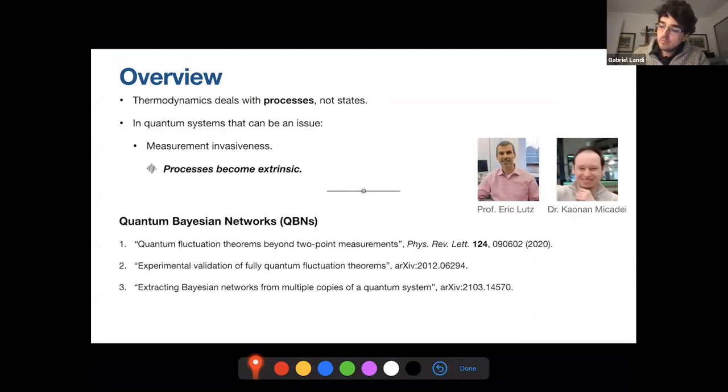The take home message that I want to express here is that thermodynamics deals with processes, not states. And so whenever there is quantum systems involved, there can be invasiveness due to measurement. And this means that the process becomes extrinsic. It doesn't depend only on the system itself, but it depends on how you measure the system. And the formalism we're going to introduce to tackle this problem, which I think is a meaningful problem in our field, is what we call the quantum Bayesian networks. And these are the three main papers that I'm going to talk about.